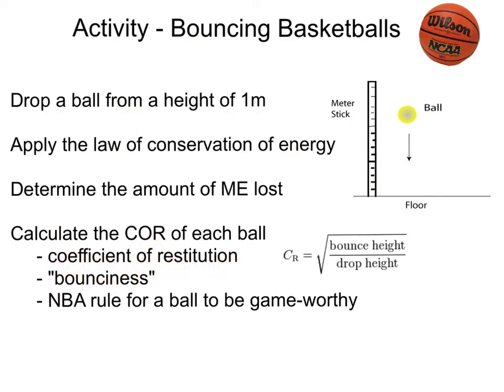The bouncier a ball, the higher the coefficient. The less bouncy a ball, the lower the coefficient. You can calculate the coefficient of restitution by taking the square root of the bounce height it bounces back up to, divided by the height you dropped it from. This is useful in the NBA, where there is a rule that a ball must bounce back up to a certain height so that players have a rhythm to their bouncing down the court.